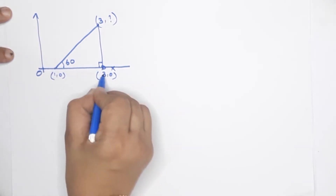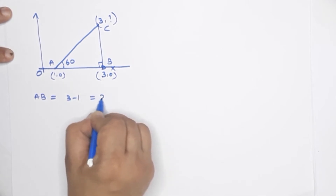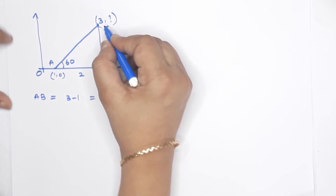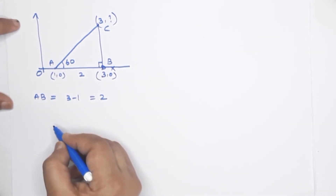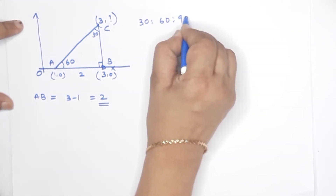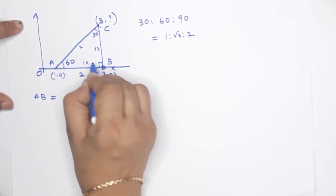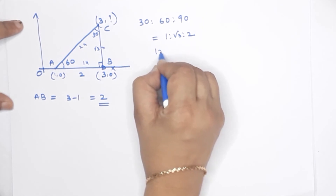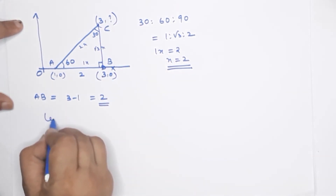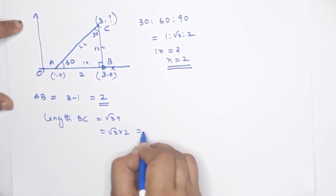This distance is 3 minus 1, equal to 2. We call the triangle A, B, C. The angles are 30-60-90. The ratio is 1 to root 3 to 2. So the distances scale as 1x, root 3x, 2x. Since the horizontal distance is 1x equals 2, x equals 2. The length B, C is root 3x, so root 3 into 2, that means 2 root 3. The y-coordinate is 2 root 3.